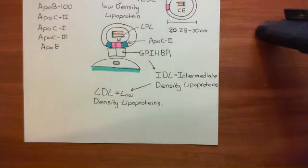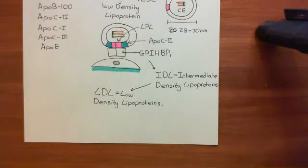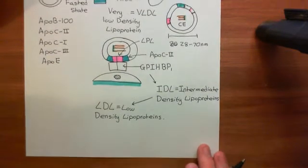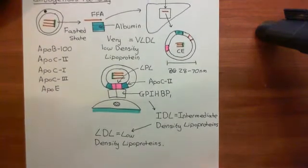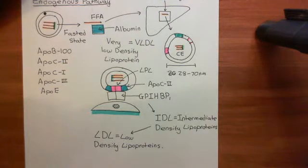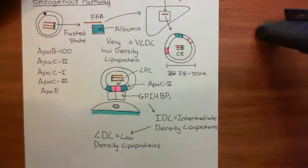Welcome to this next video in which we are discussing lipoproteins and the transportation of lipids around the body. We're currently in the process of discussing the endogenous pathway. The endogenous pathway is the way that we deliver lipid molecules to our skeletal muscle and to our cardiac muscle, even when we are in the fasted state, when there aren't lipids coming in through exogenous sources.